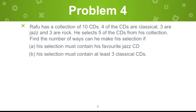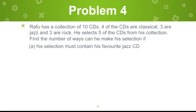Now let's go to the last problem. Raffo has a collection of 10 CDs: 4 are classical, 3 are jazz, and 3 are rock. He selects 5 of the CDs. Find the number of ways he can make his selection. Letter A: his selection must contain his favorite jazz CD. Letter B: his selection must contain at least 3 classical CDs. Let's start — underline the important information: 10 CDs consisting of 4 classical.